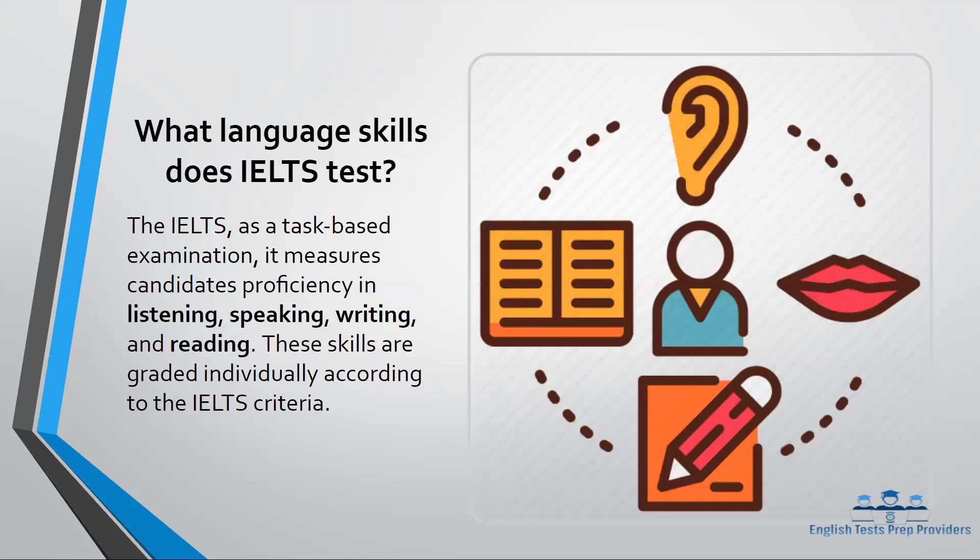Now, what about the language skills that IELTS measures? IELTS, as a task-based examination, measures the candidate's proficiency in the four macro skills. They are listening, speaking, writing, and reading. These skills are graded individually according to the IELTS criteria.